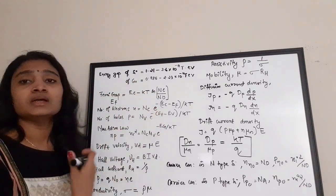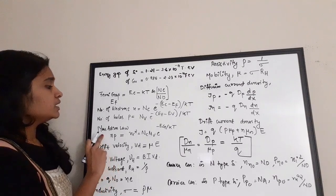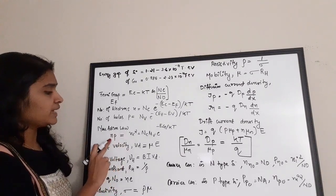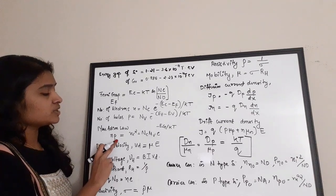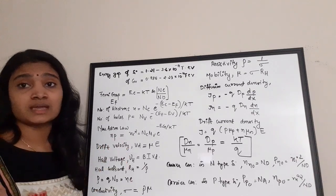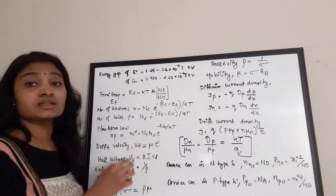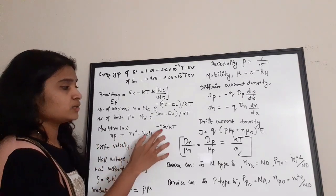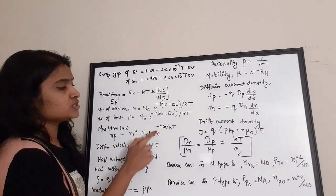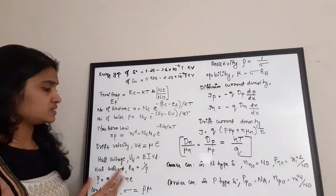The most important equation is the mass action law: np = ni², where ni is the intrinsic carrier concentration. It can also be written as: np = Nc × Nv × e^(−Eg / kT), expressed in terms of the number of carriers in the conduction and valence bands and the energy gap.